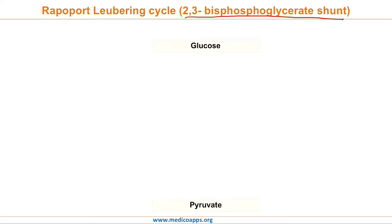Before we move ahead and understand this cycle, let us first understand an important concept. In all cells, during glycolysis, a series of reactions convert glucose into pyruvic acid. However, specifically in RBCs, the conversion of glucose to pyruvic acid takes a very different route. The start and end product for both glycolysis and the Rapoport-Luebering Cycle is the same; however, there are two important differences which we will see moving forward.